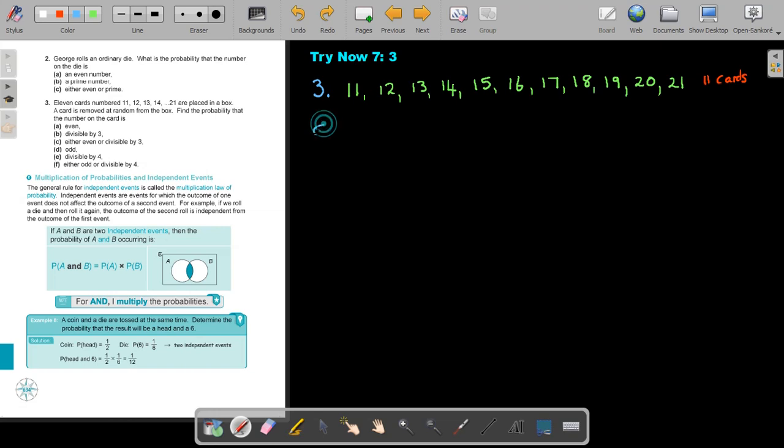Let's start with the first one. Number A. Even. Now let's mark the even numbers. 1, 2, 3, 4, 5. So how many even numbers are there? It's going to be 5 out of how many? 5 out of 11. And that's your final answer.